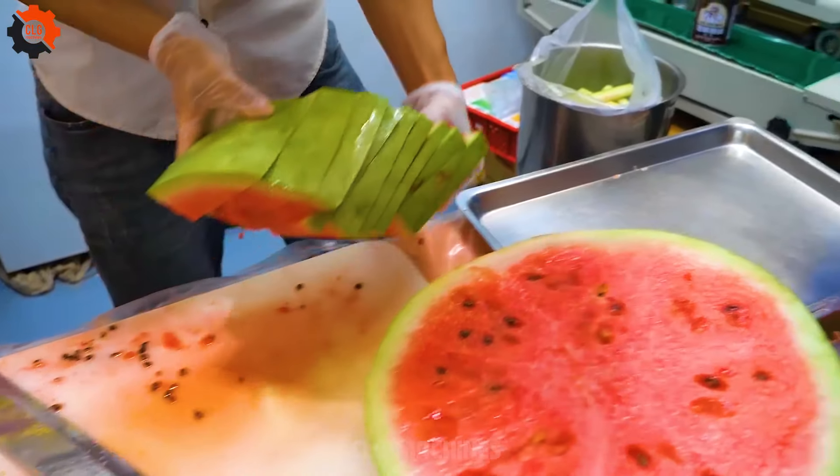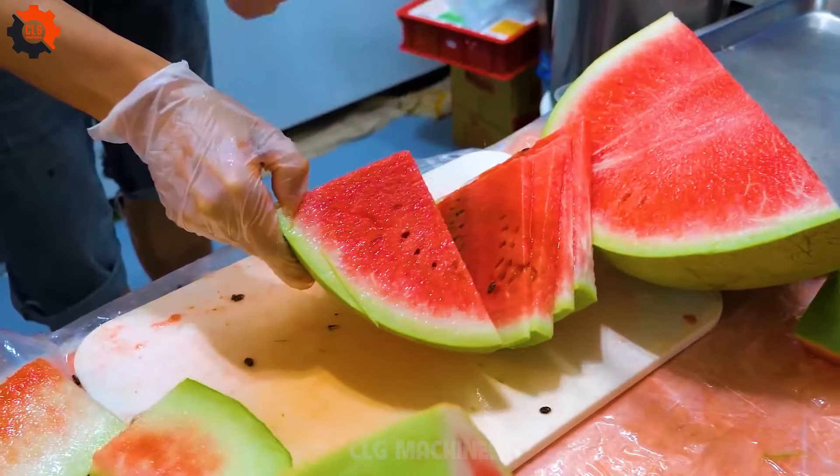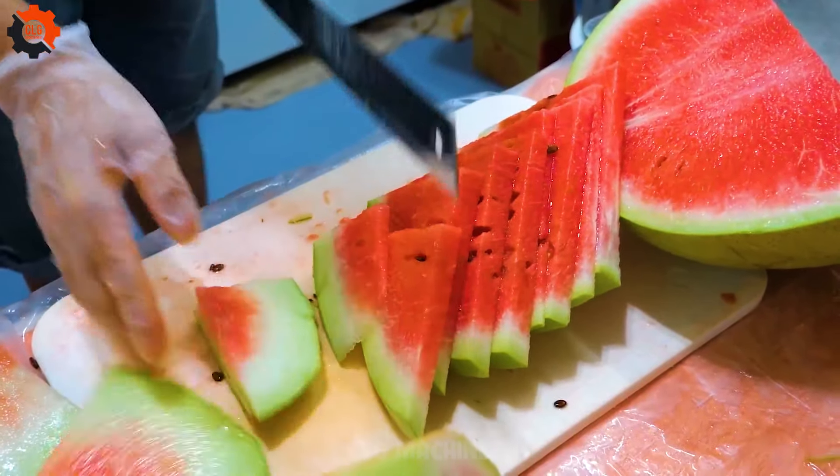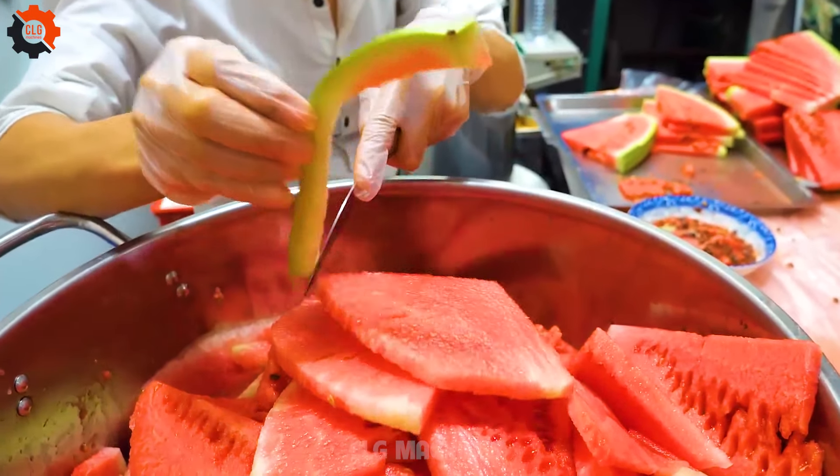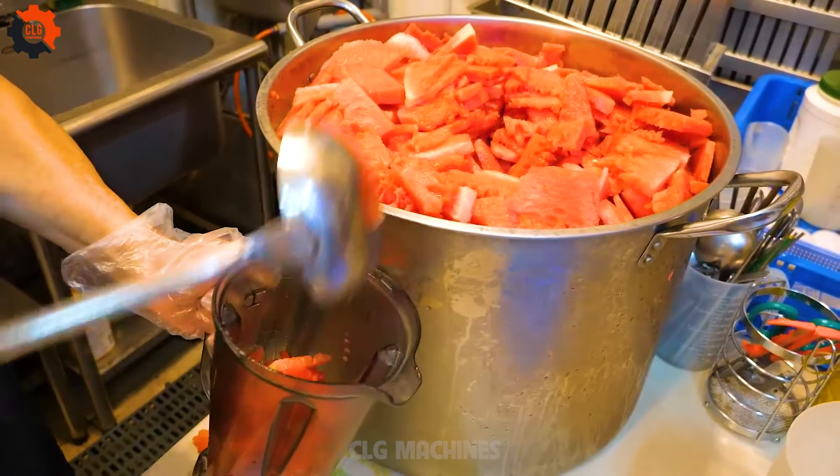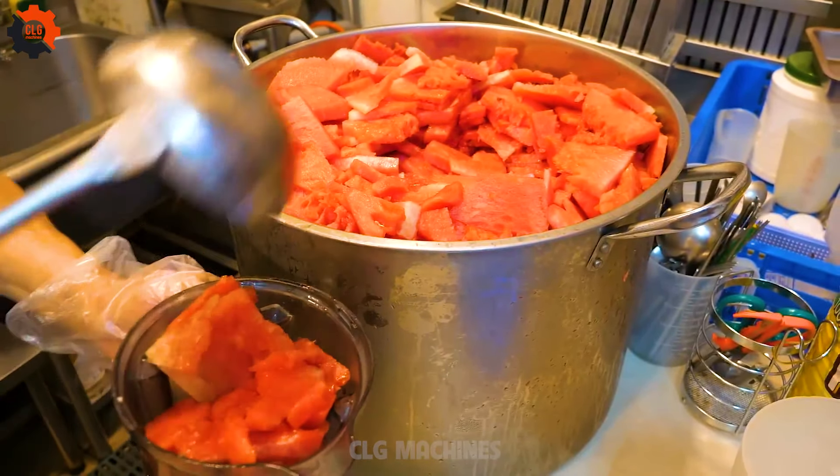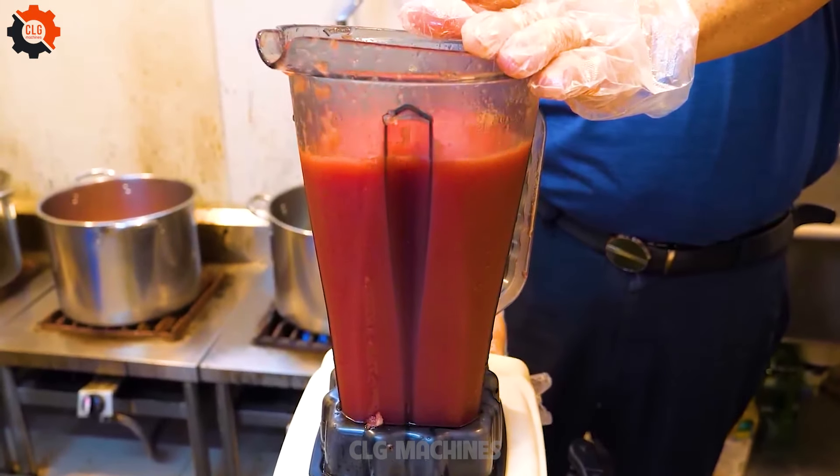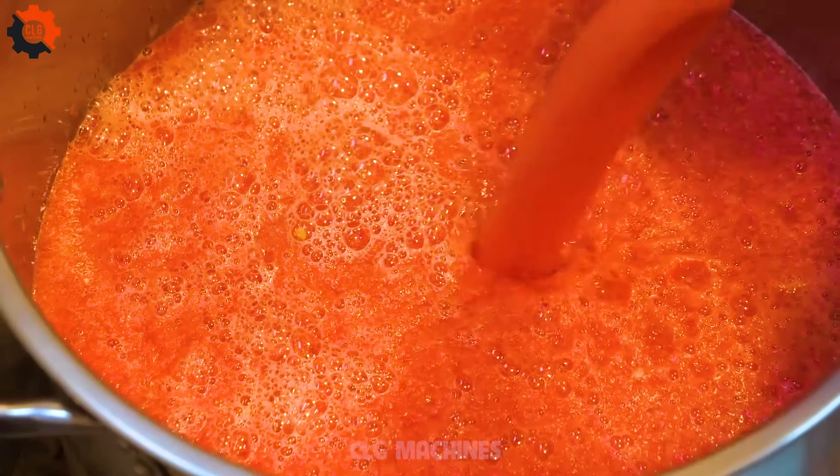Explore culinary innovation with CLG Amazing Machines on YouTube, where humor meets high-tech to revolutionize cooking. This series transforms simple ingredients into extraordinary dishes, offering a glimpse into the future of food. Each episode is a compact journey of discovery, blending entertainment with cutting-edge technology. Dive into this flavorful adventure, where each moment reveals a new facet of gastronomy and innovation. Join the journey of taste and tech combined.